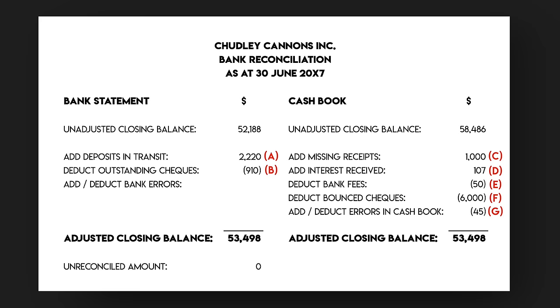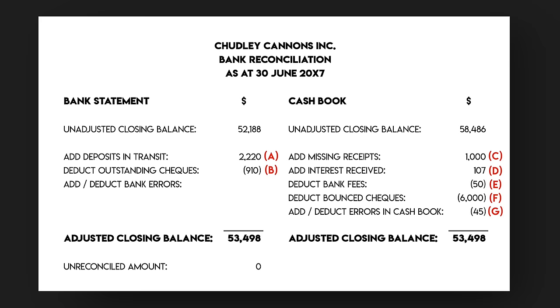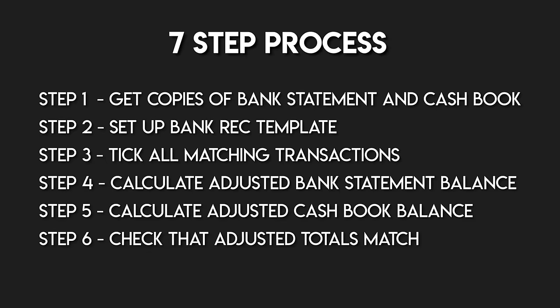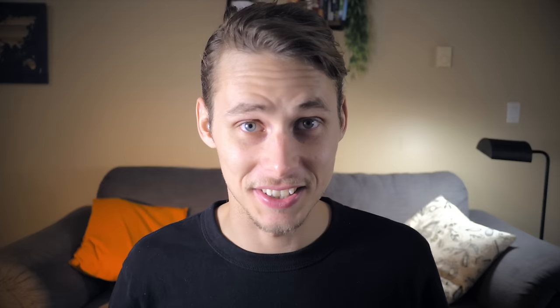That also means we've completed step 6: check that the adjusted totals match each other. It's critical that the adjusted bank balance matches the adjusted cash book balance exactly — that proves we've recorded all of the cash transactions in the general ledger. The true cash balance is $53,498. If you're still getting a difference in your bank reconciliation, there's an error somewhere in your workings and you'll need to go back over all those steps. But not today — we've crushed this bank rec, so we can move on to the last part of the process.